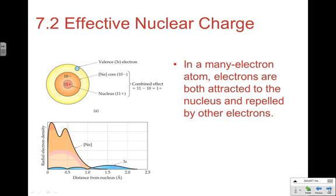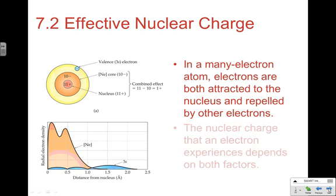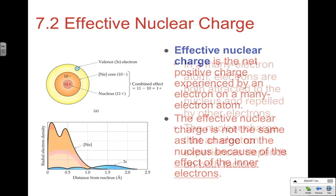The first concept we're going to look at is effective nuclear strength, and this is critical — not just for this chapter but beyond. In a many-electron atom, electrons are both attracted to the nucleus and repelled by other electrons. We really have two competing forces: the repulsion by the other electrons and the attraction by the nucleus. The nuclear charge an electron experiences depends upon both factors.